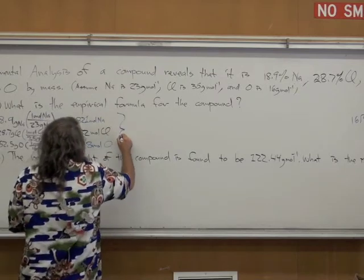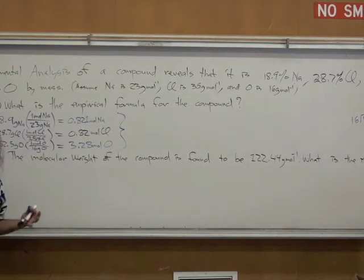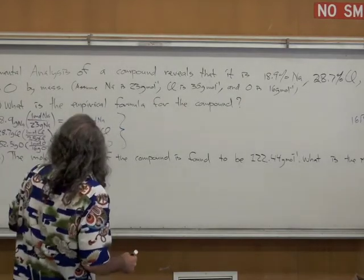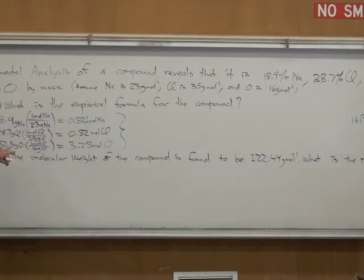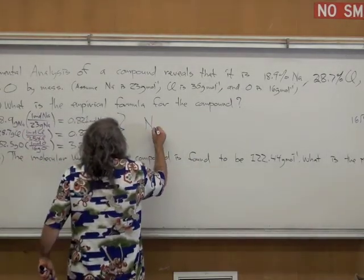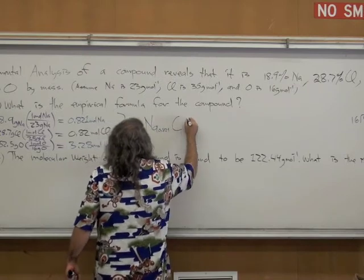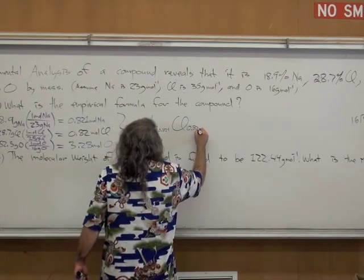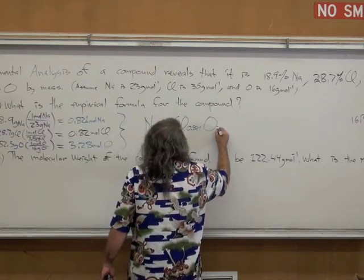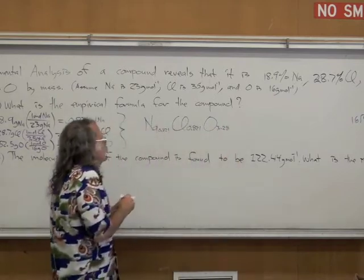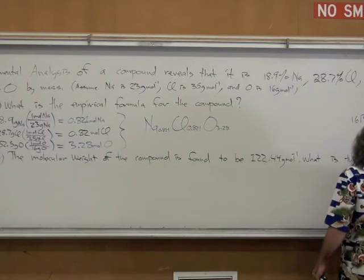Now we have enough information here to write the unreduced empirical formula. And the unreduced empirical formula, I'm going to use all the symbols. I'll start with the most metallic on the left-hand side, which would be the sodium. And then I'm going to put the oxygen last. So it's going to be sodium 0.821, chlorine 0.82, and oxygen 3.28. That is the unreduced empirical formula.